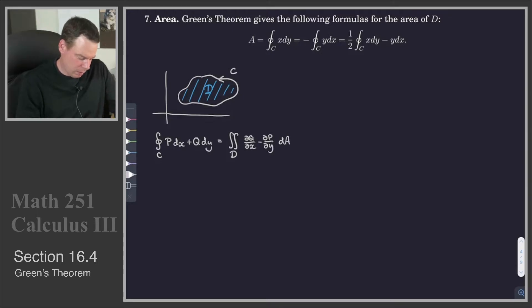Now in the particular case that dQ/dx minus dP/dy, so this thing here, in the case that that was 1, so let's assume that that thing is equal to 1,